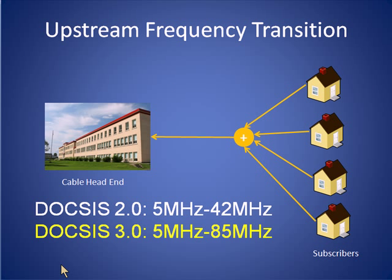In this standard, the cable companies would ideally like to reclaim the portion of the bandwidth from 42MHz to 85MHz, which is currently used for downstream transmission, to be reconfigured for upstream use to increase the speeds that they provide to their subscribers for upstream transmission.